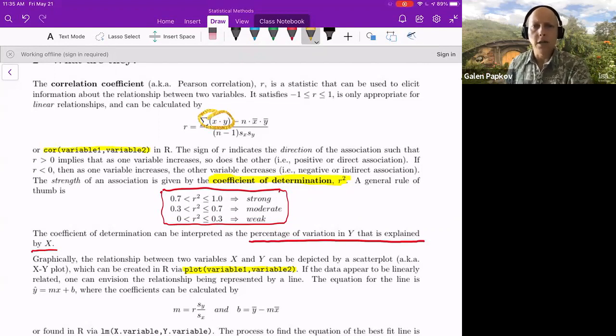From that summation, you're going to subtract n times the product of the sample means. And then when you have that numerator, you divide by n minus 1, and also divide by the two standard deviations.